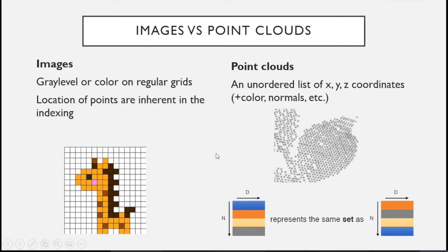The application of deep learning methods is different from application to images because images are usually defined on regular grids. All the locations of the points or attributes are always inherent in the indexing structure. It's a different story for point clouds because a point cloud is an unordered list of XYZ coordinates of all these points, and there is no regular grid structure unless you convert it into a voxel or volumetric structure.